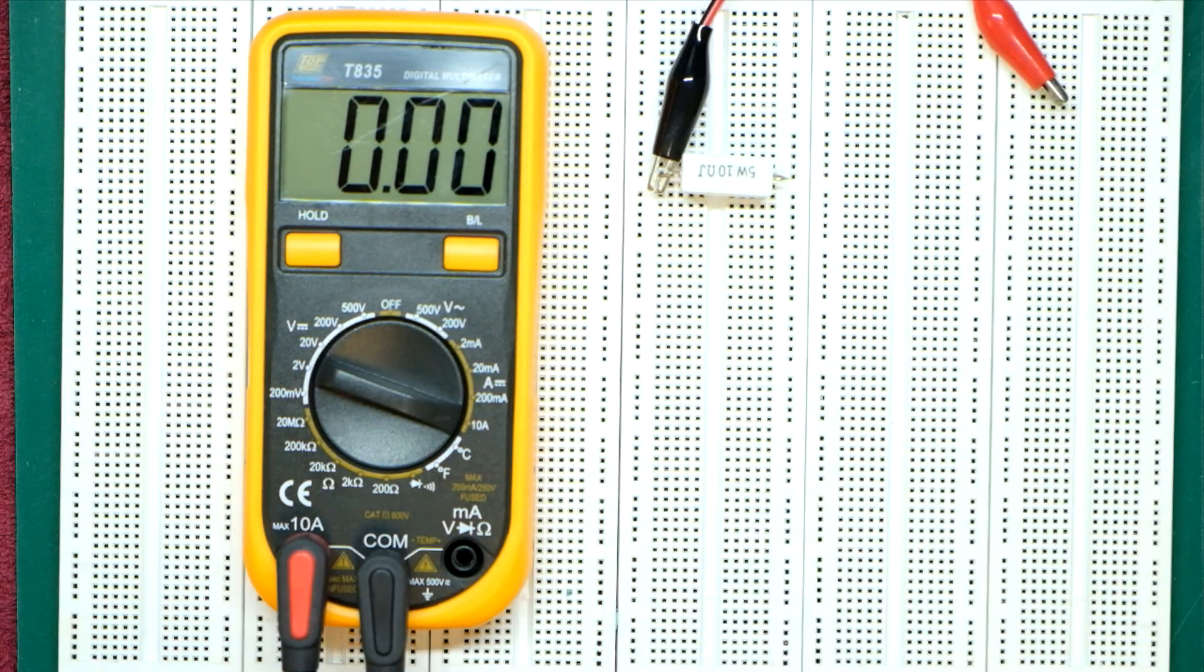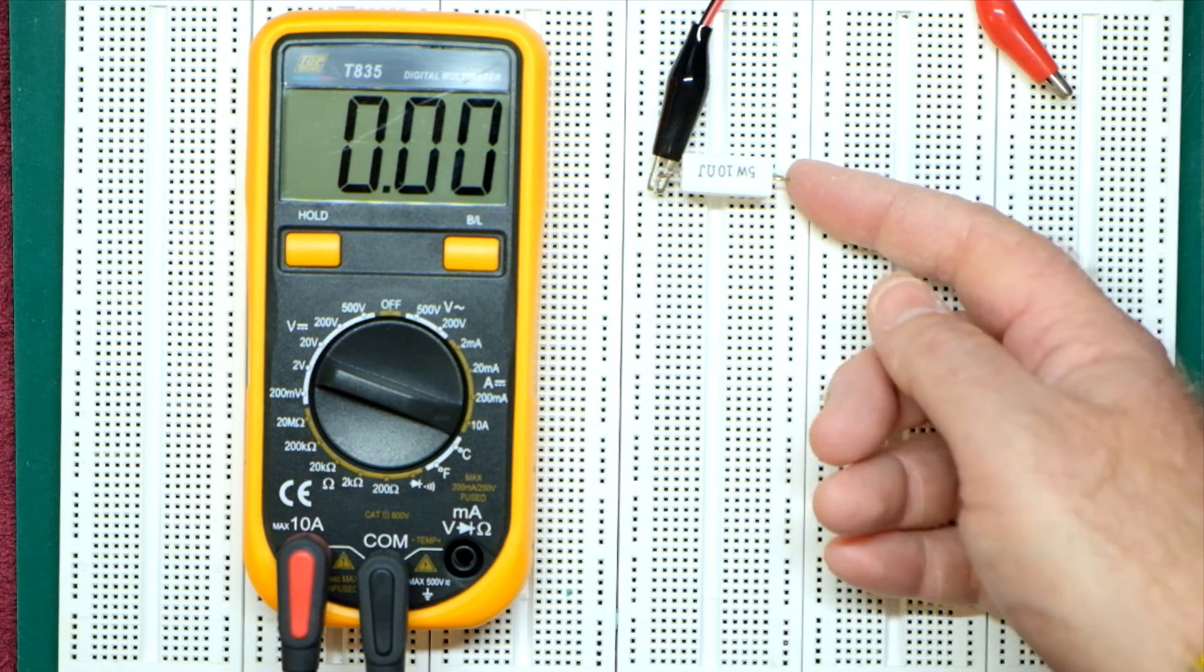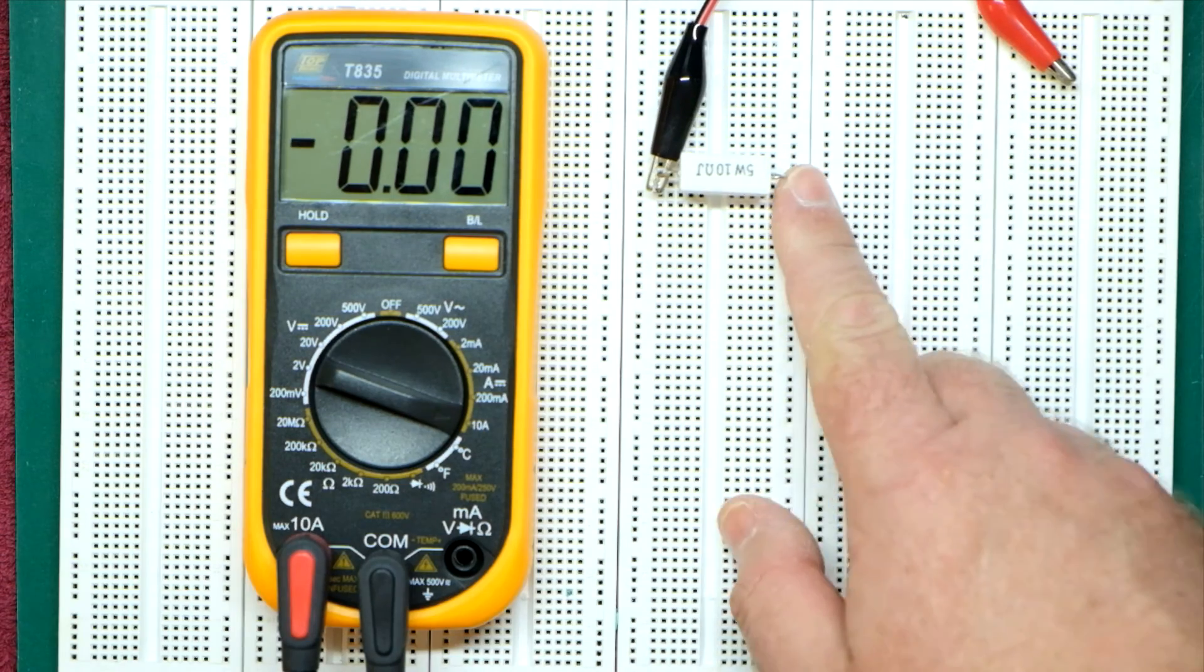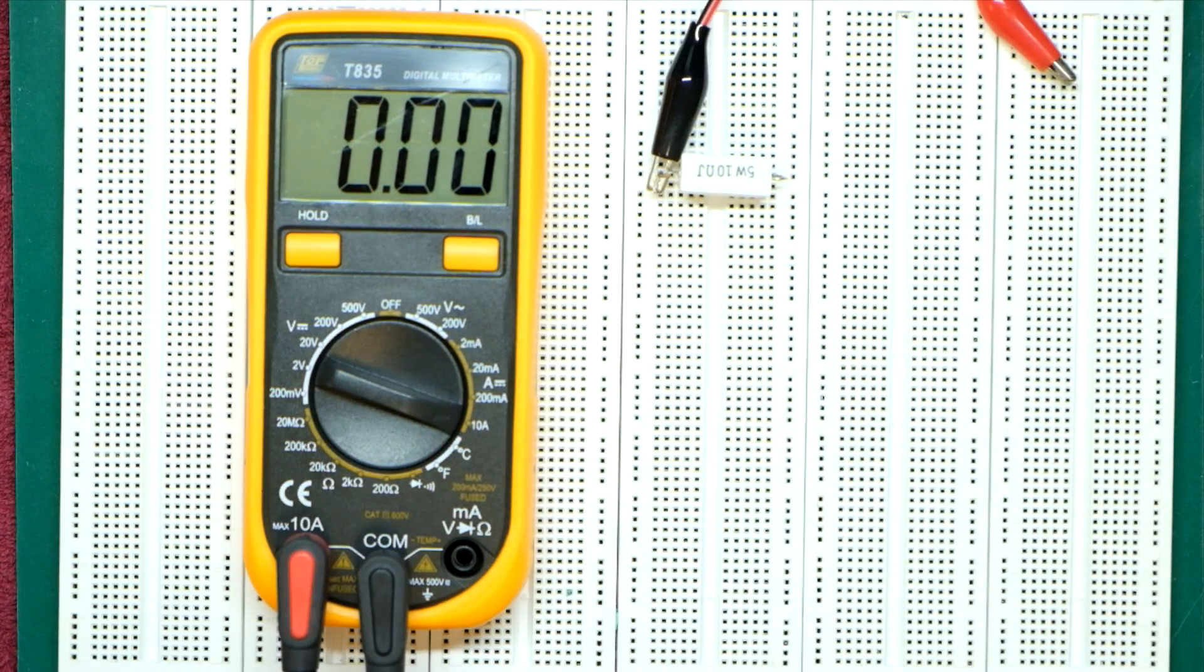Bearing in mind there I just connected my meter in ammeter mode basically in circuit with the resistor, so we can measure the current flowing through the resistor. Simple, very simple.